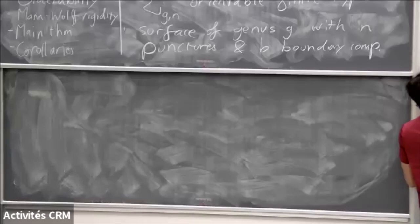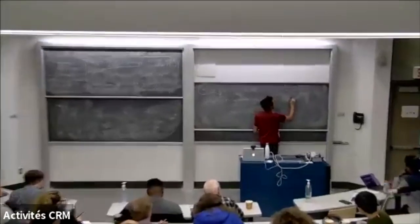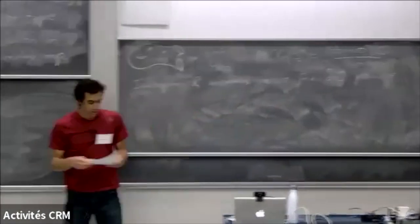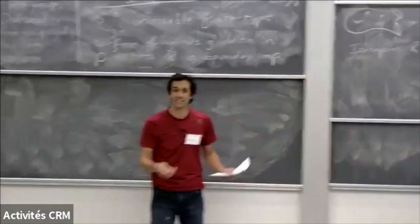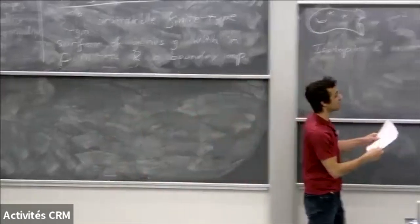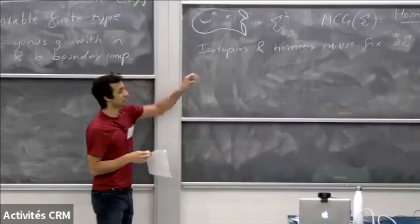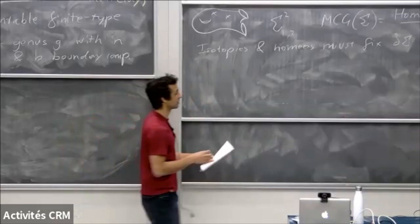So the mapping class group of a surface is the group of homeomorphisms — orientation-preserving ones — up to isotopy. We note that isotopies and homeomorphisms must fix the boundary point-wise. The homeomorphism group of a surface is a really great group to think about, but it's also very hard. When you mod out by isotopy, this group becomes a little nicer when you're on a finite type surface. It's a finitely generated, finitely presented group — nice and discrete.